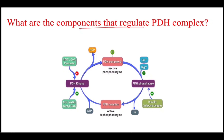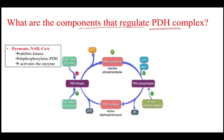The components that regulate this PDH complex include firstly pyruvate, NAD+, and coenzyme A — these inhibit the enzyme kinase. When kinase is inhibited, the phosphate group is not added, so the PDH complex remains in a dephosphorylated state, meaning the enzyme is active and pyruvate will be converted to acetyl-CoA.